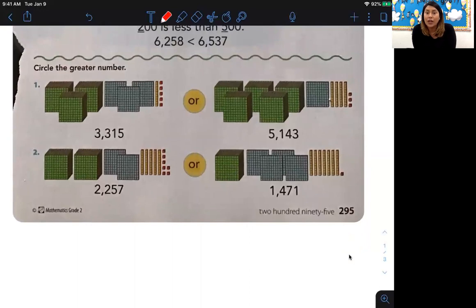All right, since they did that one for you, we're going to move on down and jump right into our paper. You're going to circle the greater number, not the base 10 blocks, just the number that's right underneath. Are you ready? All right, let's compare them. 3,315 or 5,143. Which one is greater? If we're just comparing the number in the thousands, they're two different numbers. Which one's bigger? Which one has more thousands? Yes, this one. Go ahead and circle it. Good job. Let's move down below. Which one is greater? 2,257 or 1,471? You're right, the first one is. Good job, friends.